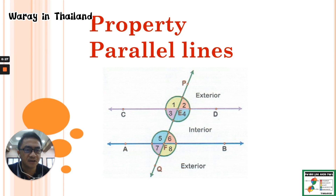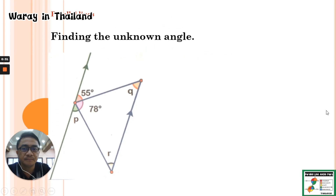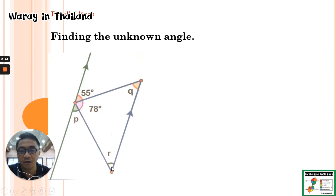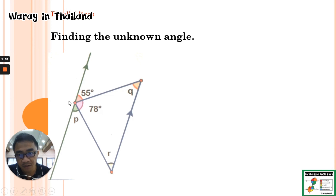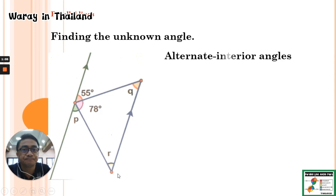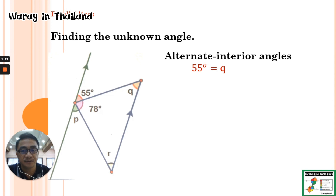For this picture, we have the unknown angles: angle P, angle Q, and angle R. The given angles are 55 degrees and 78 degrees. We have parallel lines and two transversal lines. First, we use alternate interior angles — for this transversal line, the given angle is equal to angle Q. So angle Q equals 55 degrees by means of the alternate interior angles.